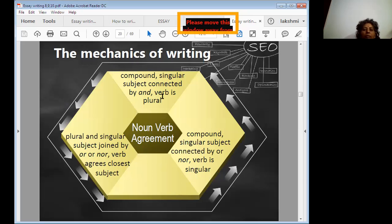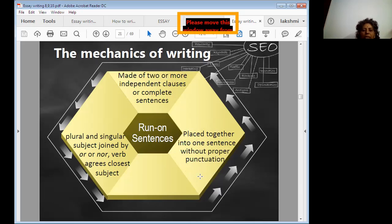Now, mechanics of writing. You can write compound sentences. Singular subject connected by 'and,' verb is plural. Singular subject joined by 'or' or 'nor,' verb agrees with closest subject. Non-verb agreement: you can use these mechanics while writing sentences.